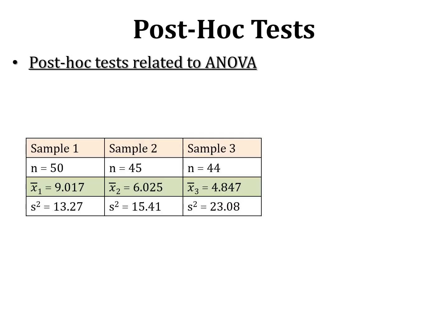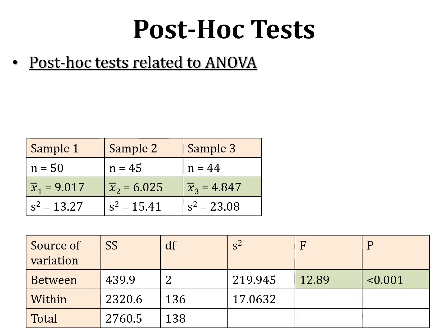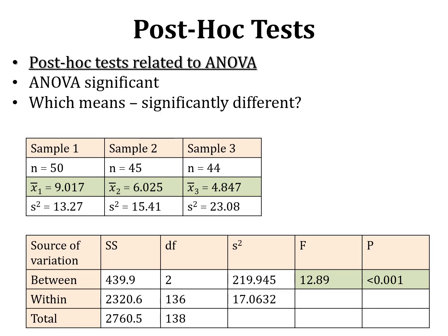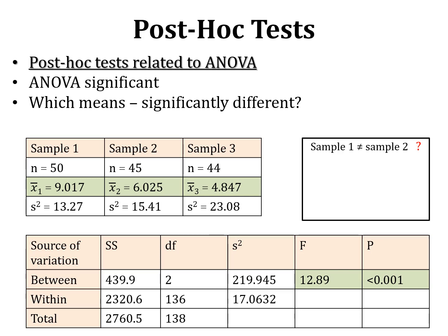In another example of three samples, ANOVA showed very highly significant differences. But which means are different — sample one and two, one and three, or two and three? This is the concept of post hoc tests: after your main statistical test, which is ANOVA, you need to further explain your results. Since ANOVA is an omnibus test giving overall comparison, you use post hoc tests to find which means are specifically different.